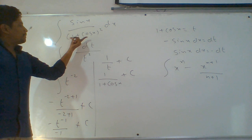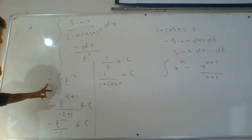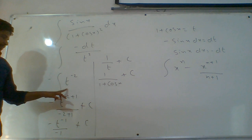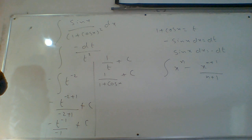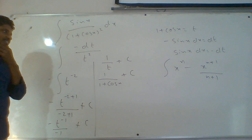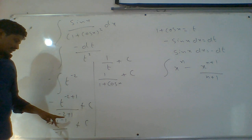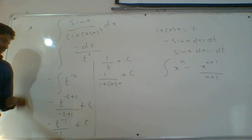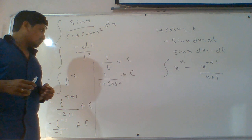Minus comes outside. With dt in numerator, it becomes t power minus 2. Using the x power n formula: integral x power n is x power n plus 1 by n plus 1. For t power minus 2: t power minus 2 plus 1 by minus 2 gives t power minus 1 by minus 1. The negatives cancel, giving t power minus 1 equals 1 by t. In the place of t, put 1 plus cos x. Final answer: 1 by (1 plus cos x) plus c.